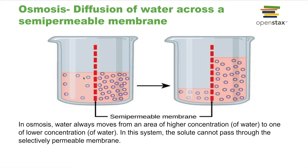After a while, because the solvent is moving, the level of solution goes down on the left and goes up on the right-hand side. This is equilibrium. Equilibrium doesn't mean that water molecules are static — there are going to be as many water molecules going to the left as there are going to the right.